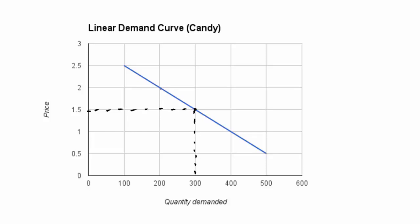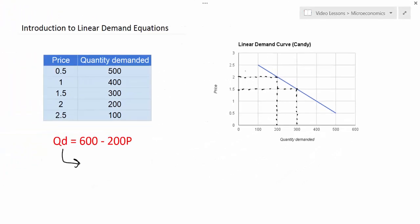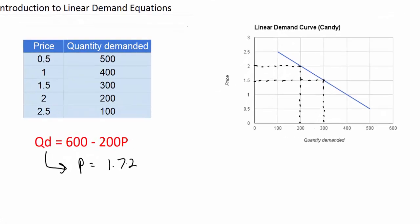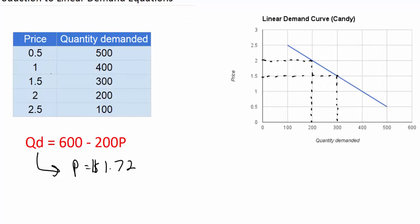It's also easy to see that at two dollars, two hundred units of candy are demanded. But the question is, what if we had a price that wasn't easily observable on our demand curve or in our demand schedule? What if we had a price in between the prices visible in our demand schedule? For example, what if I wanted to know how much candy would be demanded at a price of one dollar and seventy-two cents? That's somewhere between a dollar fifty and two dollars, so the quantity is going to be somewhere between three hundred and two hundred units.